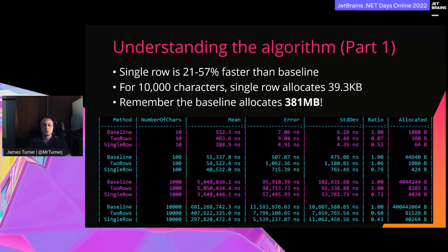Using a single row, we're already up to 57% faster than our baseline — and we're only a few minutes into the presentation. We achieve that by removing 99.9% of allocations for our 10,000 character example. This was only possible by having a better understanding of the algorithm.